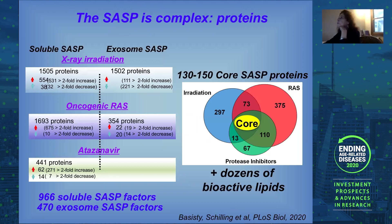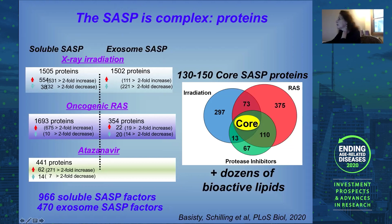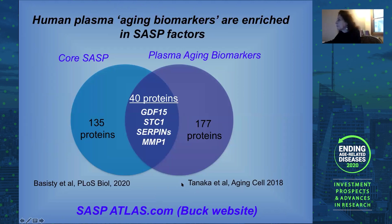We've had much more insight into the secretory phenotype by looking at proteins — RNA is good, but it doesn't always translate into proteins. In a collaboration with Birgit Schilling, a mass spec expert at the Buck Institute, and looking at different inducers in human fibroblasts — both soluble proteins and proteins in exosomes — we've been able to identify a core of proteins shared across inducers. Gratifyingly, a paper from Luigi Ferrucci's lab looking at proteins in human plasma as aging biomarkers shows a large overlap with what senescent cells produce.